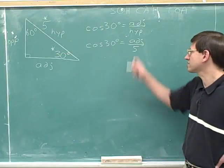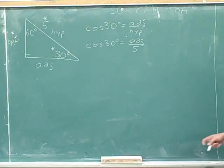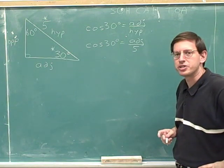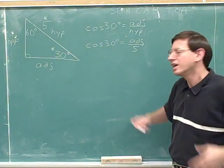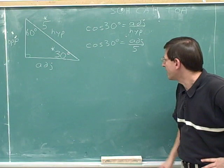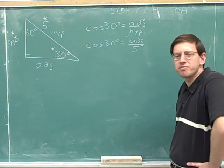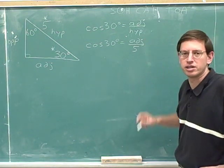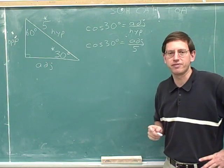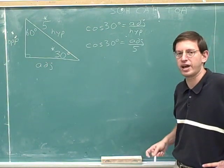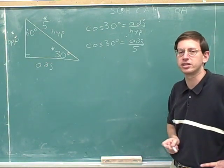So now we just have to use algebra to solve for this unknown. Is your algebra good enough to solve this equation? We'll go through the algebra for that. To solve an equation, we need to get this adjacent term by itself. If we could just rearrange the equation so the adjacent term was by itself, we'd be in good shape.